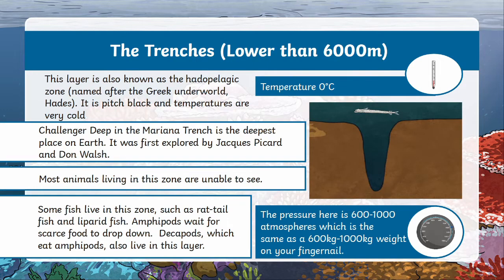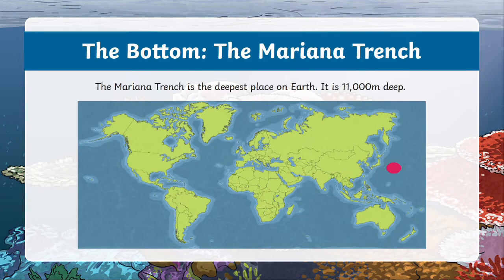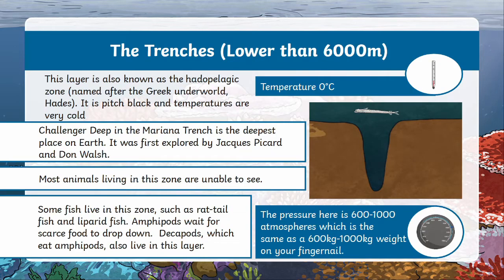Now we're right at the bottom of the ocean in the trenches. The trenches are any ocean environment that is lower than 6000 meters below the surface and again the temperature is freezing down there. This layer is named after the Greek underworld, Hades. It is absolutely pitch black. The deepest place on earth is in the Mariana Trench, first explored by Jacques Piccard and Don Walsh. Most animals living in this zone are unable to see and don't have eyes, such as rat tail fish and snail fish. Snail fish, or Liparidae, actually live deeper than any other fish, giving them a significantly smaller chance of getting eaten. Amphipods wait for scarce food to drop down, and decapods, which eat amphipods, also live in this layer.